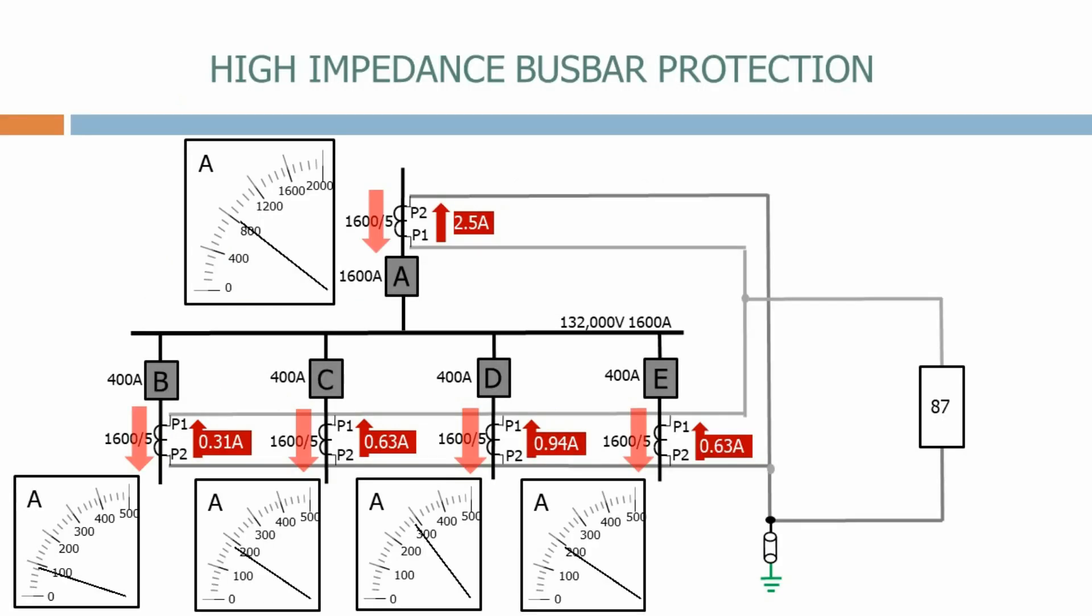Let's now see what happens if we have an out of zone fault with a value of 20,000 amps. The currents now increase substantially on incomer A and the faulted feeder B.